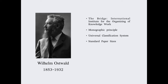Another early thinker heavily influenced by Otlet was Wilhelm Ostwald. He was a famous chemist who actually won the Nobel Prize in 1909. He met Otlet in Brussels in 1910 and was very excited about his ideas. He used most of the money from his Nobel Prize to begin a similar institute in Germany, which was called The Bridge — an international institute for organizing knowledge work. He adopted the monographic principle and the Universal Decimal Classification system from Otlet, which had a heavy influence on his own system.